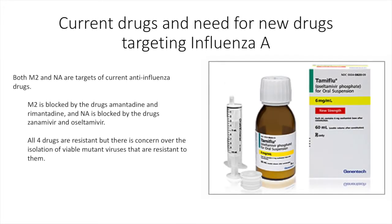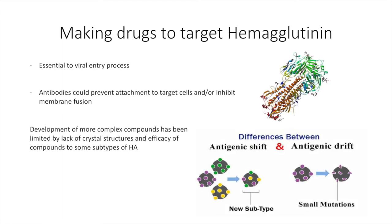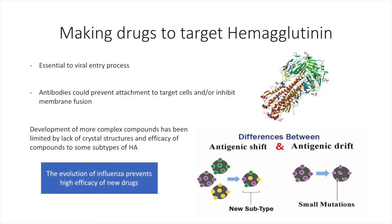The two other proteins of the influenza virus, the ion channel M2 and neuraminidase, are current targets of anti-influenza drugs. M2 is blocked by the drugs amantadine and rimantadine, while neuraminidase is blocked by zanamivir and oseltamivir. All four drugs face resistance issues, and there is a rising need for new drugs that may be able to resist mutant viruses. Drugs targeting hemagglutinin are in development and may be more effective since the protein is so integral for influenza function. However, development has been limited by the lack of crystal structures and efficacy of compounds against the various subtypes of hemagglutinin.